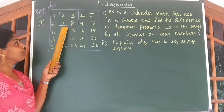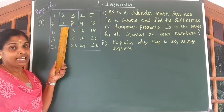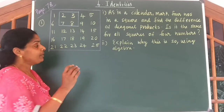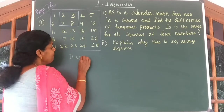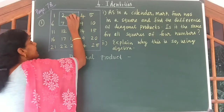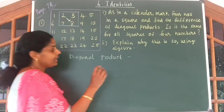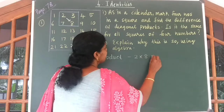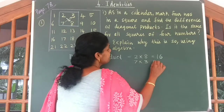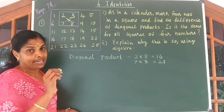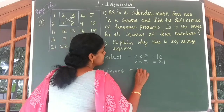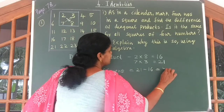So here I have marked 4 numbers as in a calendar. Now we have to find the diagonal products. Let me write the diagonal products. 2 into 8 gives you 16. And 7 into 3 gives you 21. Now we have to find their difference. The difference is equal to 21 minus 16, which is equal to 5.